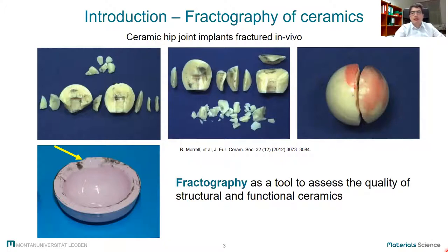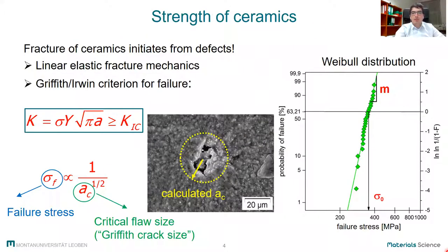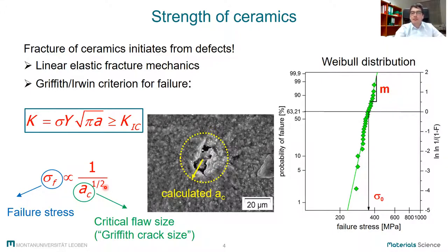So how can we link the critical defect size with the strength of advanced ceramics? As already mentioned, fracture of ceramics starts from defects, which can be described as cracks according to linear elastic fracture mechanics. If the stress intensity factor K reaches or exceeds the fracture toughness of the material, failure will occur. The critical defect size AC, or the square root of the critical defect size, is inversely proportional to the failure stress. Since defects differ in size, shape, and location, ceramics cannot be described with a single value. Therefore, the failure stresses of a sample set are plotted together with the probability of failure in the so-called Weibull diagram.